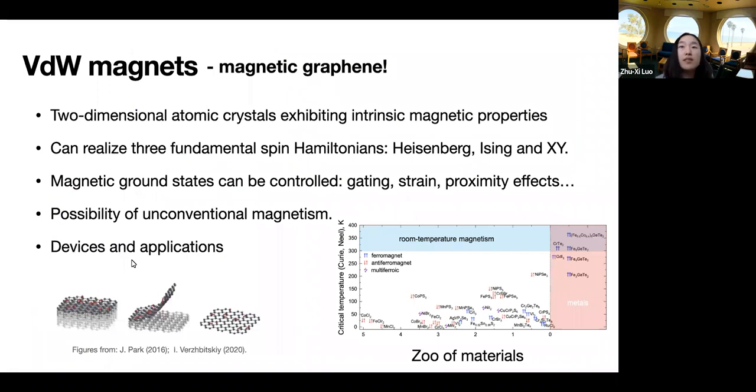Specifically, in condensed matter physics, it's always good to have some realistic materials in mind. What we'll be interested in is the Van der Waals magnets, which are basically magnetic versions of graphene. So these are two-dimensional atomic crystals exhibiting intrinsic magnetic properties. Their interlayer bonds are mostly covalent bonds, while different layers are subject to Van der Waals forces, which makes it easier to prepare them in experiments using exfoliation, even down to monolayers. One of the theoretical motivations to study such materials is that they have been found to realize the fundamental spin Hamiltonians, such as the Heisenberg model, Ising model, XY models, etc.